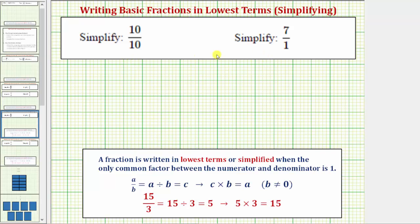We're asked to simplify the given fractions. For these two examples, it's helpful to remember that a fraction bar means division. So in general, if we have a over b, this is equal to a divided by b.